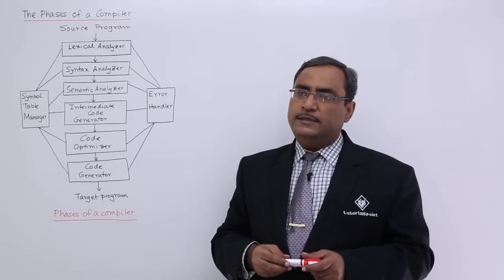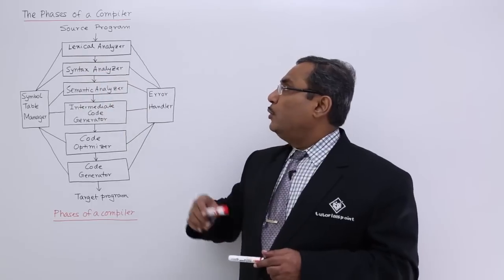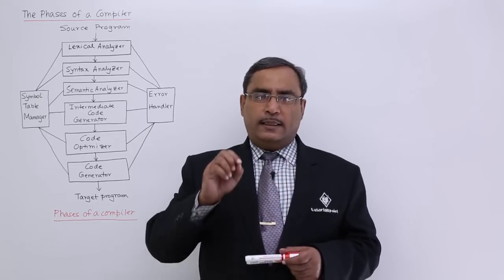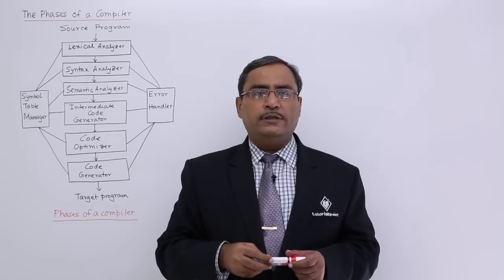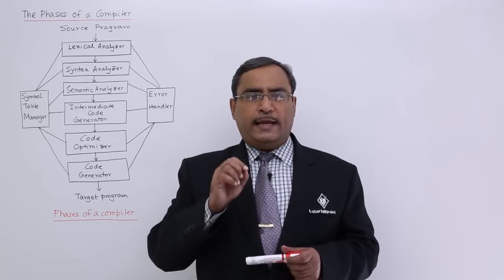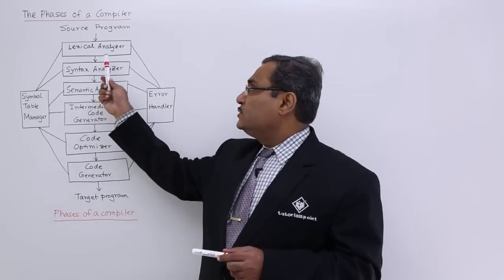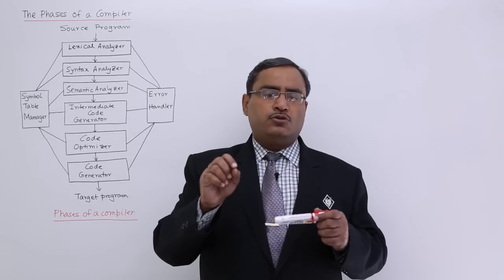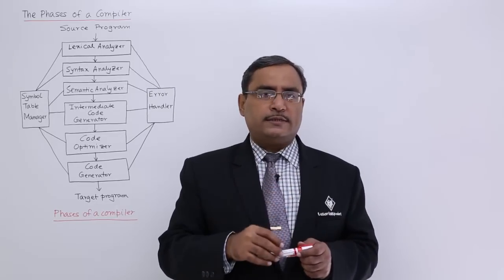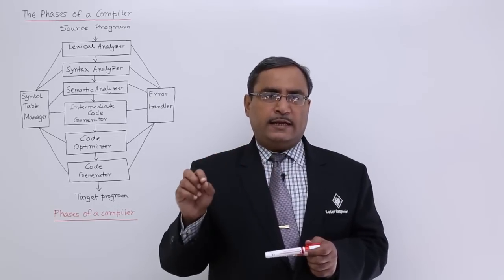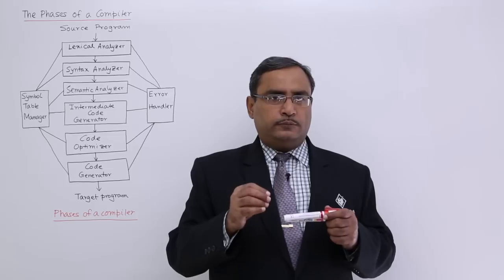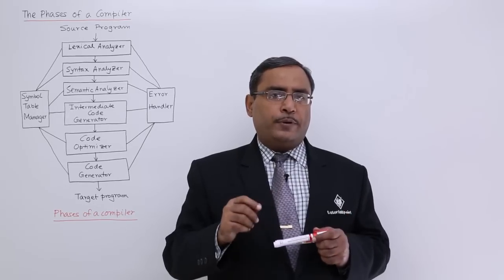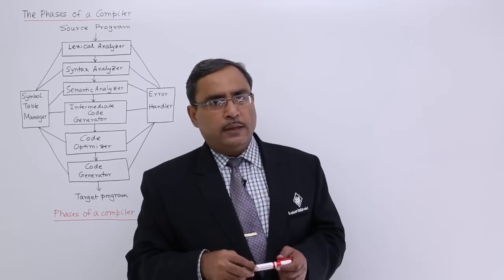The source program will be taken by the compiler as input, and at first it will go to the lexical analyzer. The lexical analyzer can also be called a token analyzer. For example, in Java or C programming, if we take the statement 'A = B + C;', in the lexical analyzer phase this statement will be processed through token analysis. The tokens will be generated as: identifier, assignment operator, identifier, algebraic operator, identifier, and punctuation symbol.